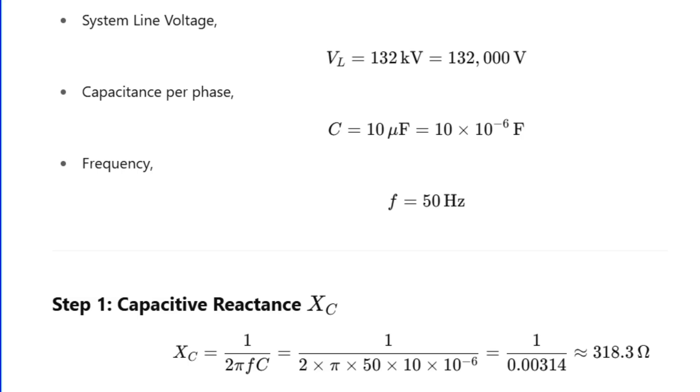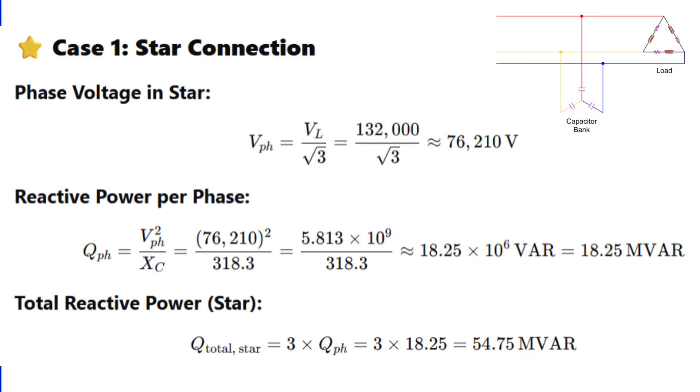In a star connection, each capacitor is connected from phase to neutral, so the phase voltage will be line voltage divided by root 3, that is 132,000 volts divided by root 3, which comes out to approximately 76,210 volts. Now reactive power per phase is V squared divided by XC, that is 76,210 squared divided by 318.3, which gives approximately 18.25 megavolt-ampere per phase. Multiply that by 3 for the total: 18.25 times 3 gives 54.75 megavolt-ampere reactive in star connection.